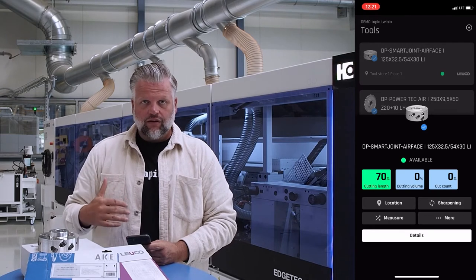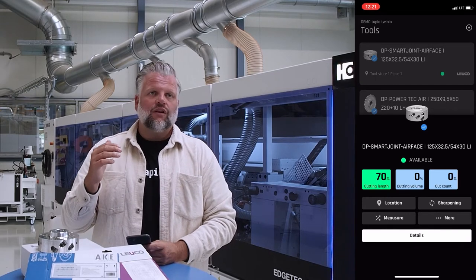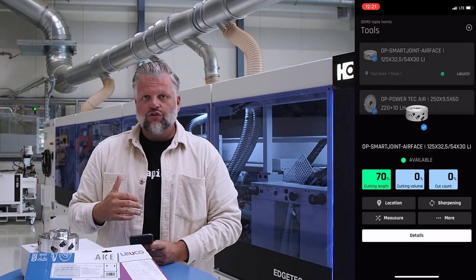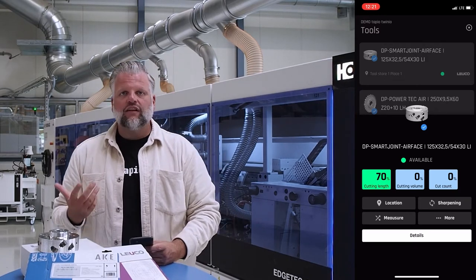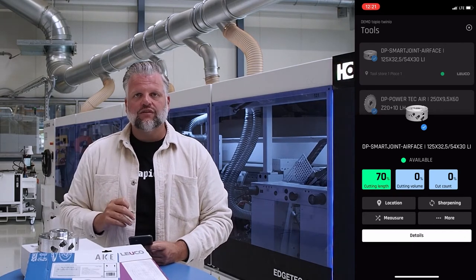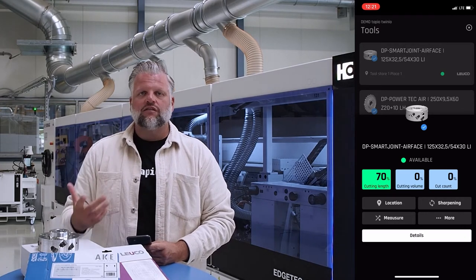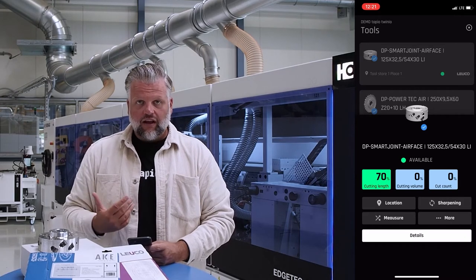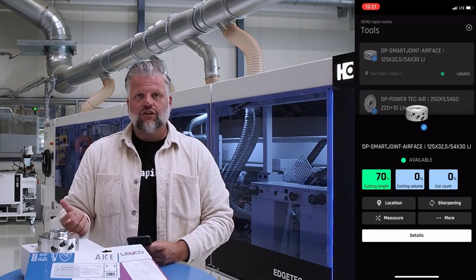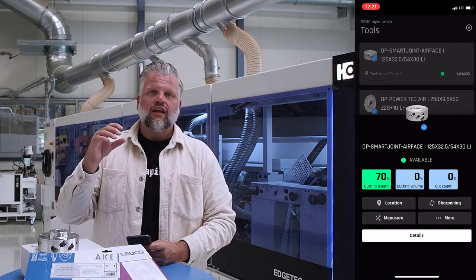When your machine is connected and has the technical requirements, for example a SawTech by HOMAK, it can retrieve tool data straight from Twinio. No manual typing — you simply select the tool for the production process, all tool data goes straight into the program on the machine, and you can start production. This is a big advantage: all machines connected to Twinio enable a seamless exchange of process data and tool data.